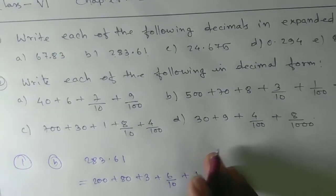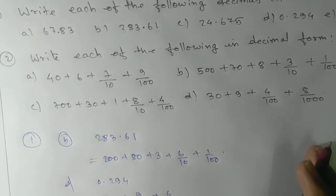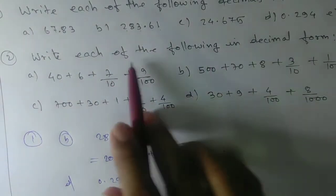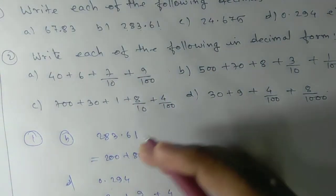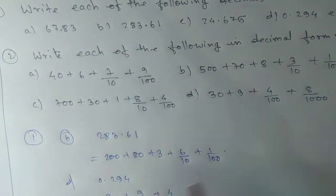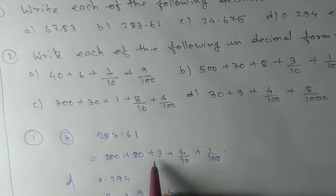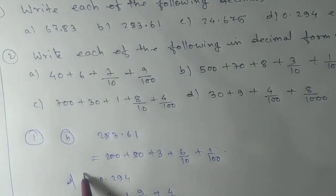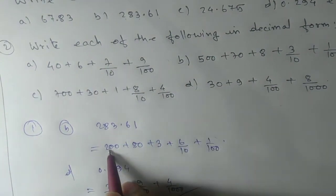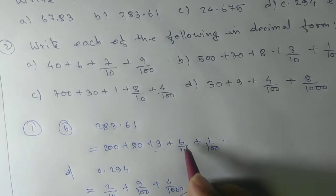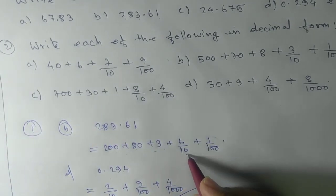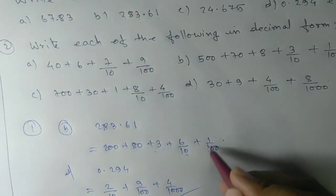Now next, you need to convert this expanded form into decimal form. That is totally opposite of this one. If I give you this expanded form and I'm asking you to convert into decimal, simply you can see we have 200 plus 80 plus 3, that means 283. And then it is in which place? Tenths place - put it there. One is in the hundredths place, so you write in the hundredths place.